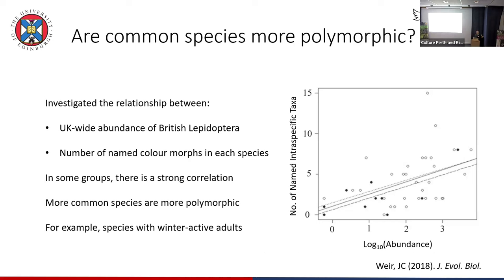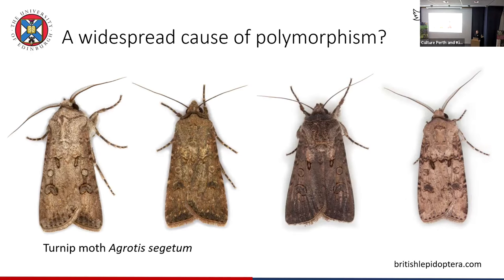This is consistent with the idea that a major selective pressure in the real world is predators like birds forming search images, hunting to those images, and disproportionately predating really common colour forms — and that drives the evolution of new colour morphs that look different. I feel like I'm labouring the point, but it took me a long time to get my head around this. There's a lot of scope here — this is a really widespread cause of polymorphism, and there's lots of scope for work on how much of a driver of polymorphism this kind of selection is.